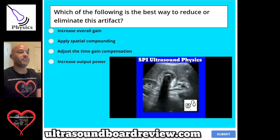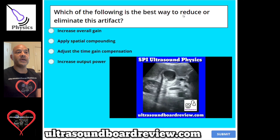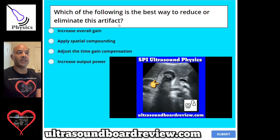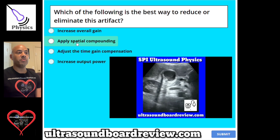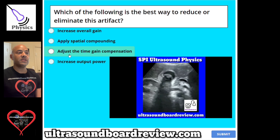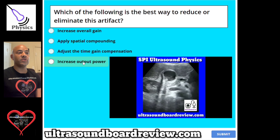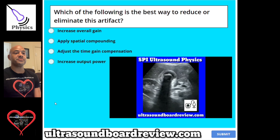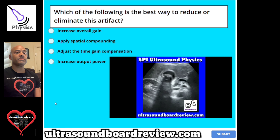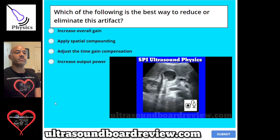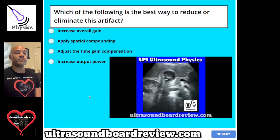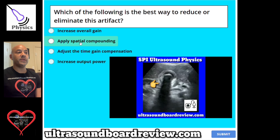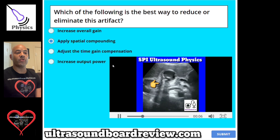Question 104. Which of the following is the best way to reduce or eliminate this artifact? A, increase overall gain. B, apply spatial compounding. C, adjust the time gain compensation. Or D, increase output power? The answer is B, apply spatial compounding.